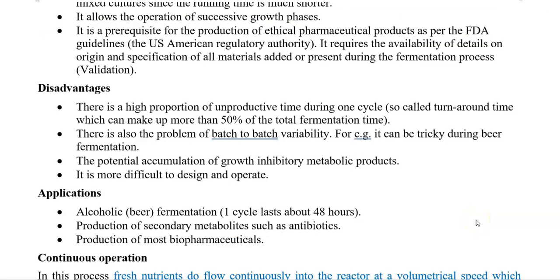Now we look at the disadvantages of using batch culture. A high proportion of unproductive time, commonly referred to as turnaround time, is present during one cycle, which can account for up to 50% of the total fermentation time. The next issue is batch-to-batch variability. For example, this type of variation creates a significant problem in beer fermentation, where one batch may have a different taste and aroma compared to another batch.